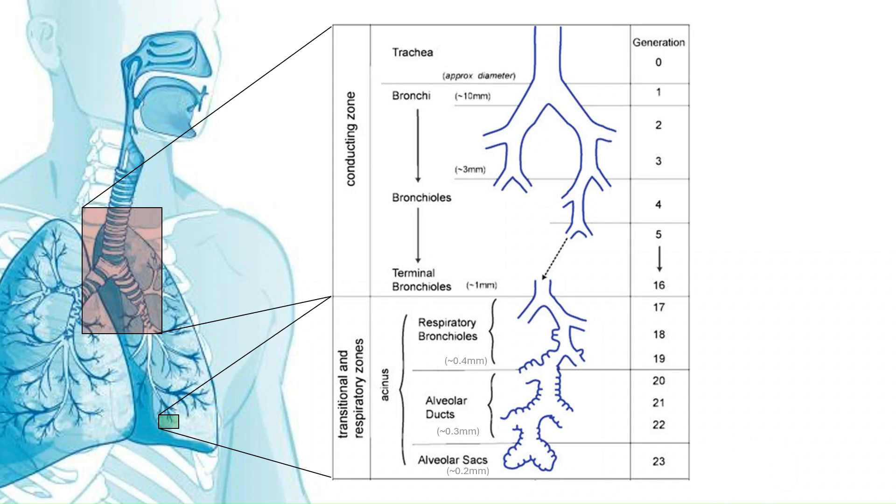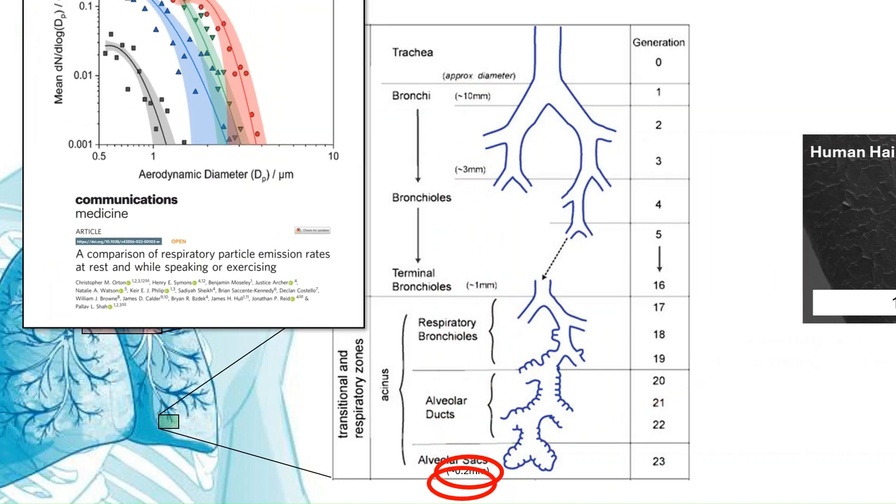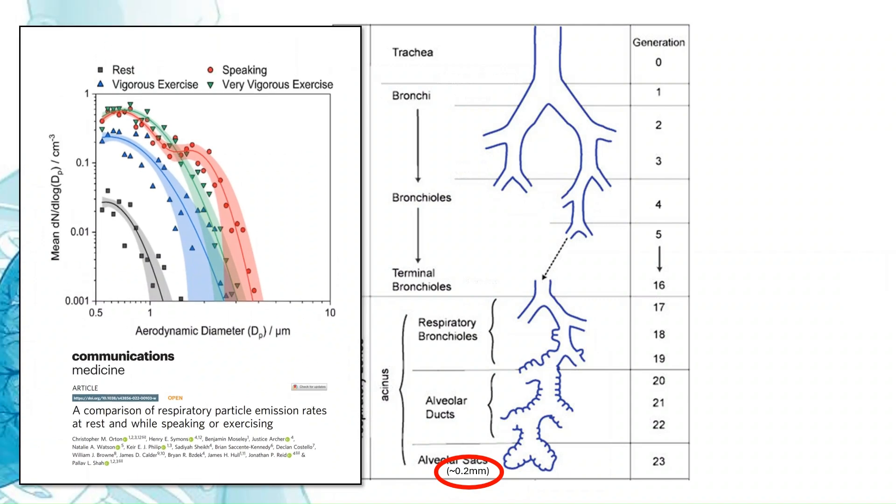the airways split 23 times. Now, the size of the airways after each split get progressively smaller, such that the deepest regions of the lungs, the diameter of the airways is about 200 microns, which is about double to triple that of a human hair. Now, for context, the size distribution of exhaled aerosol, which is the aerosol that carries infectious virus, is much smaller, around 0.5 to 5 microns.